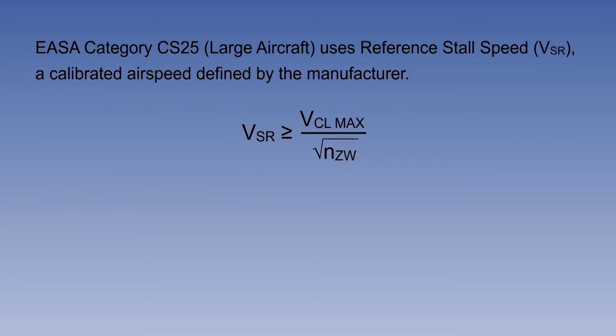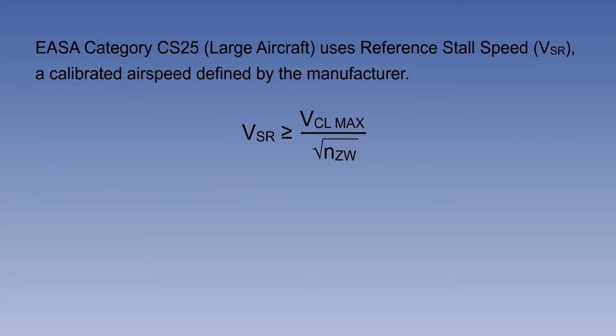For large aircraft in EASA category CS25, a reference stall speed known as VSR is used. VSR is a calibrated airspeed defined by the manufacturer and may not be less than a 1G stall speed.